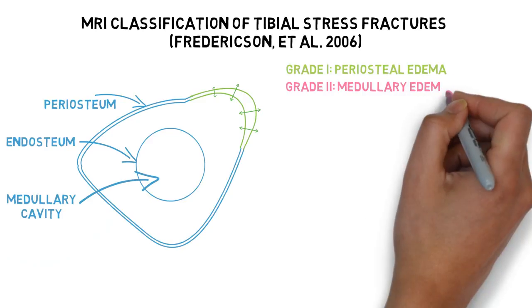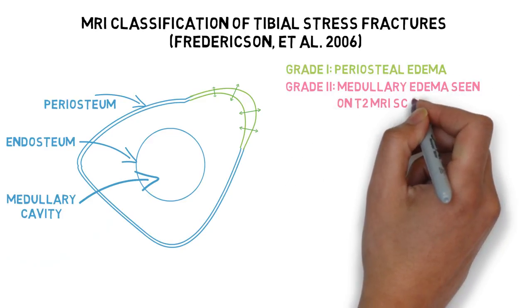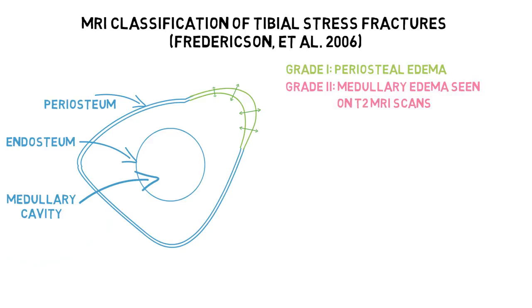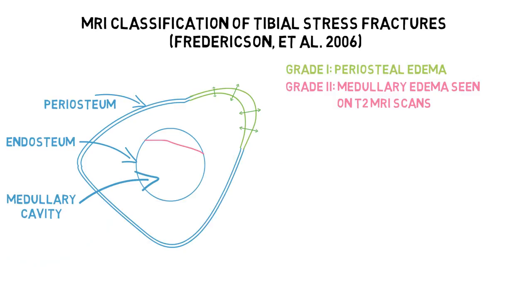Grade 2 describes edema being seen on T2 weighted images. On T2 scans, edema is a bright white signal, so it is easy to see and compare with normal structure.